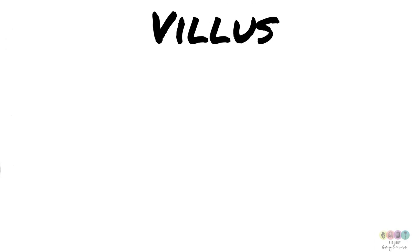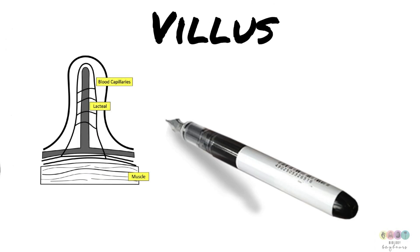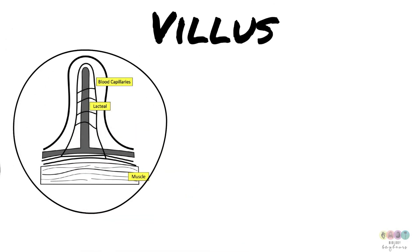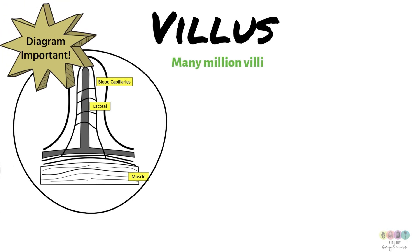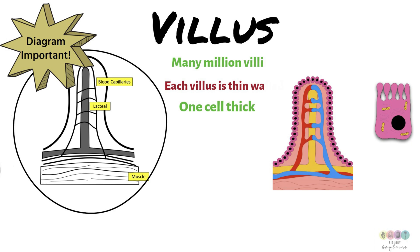So what are these villi? One of them is known as a villus. And this is a diagram that you should know. You should be able to draw it and label it. Really important. The villi are really important. There are many millions of them. So they greatly increase the surface area for absorption. Each individual villus is thin-walled. It's only one cell thick. So this allows for a very rapid diffusion. On the surface of each of those individual cells are these little microvilli. These further increase the surface area.